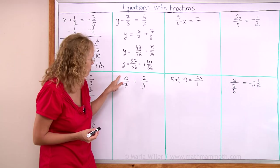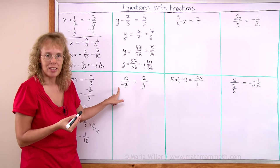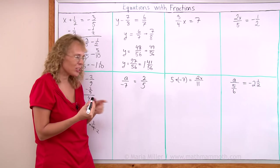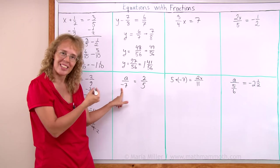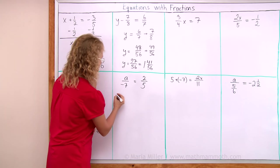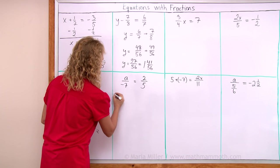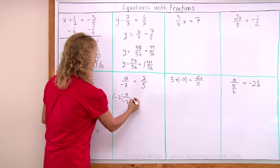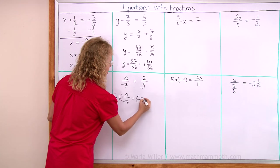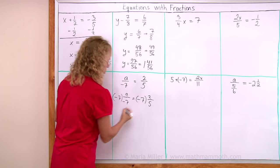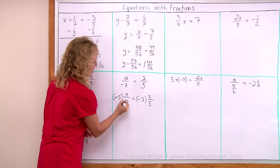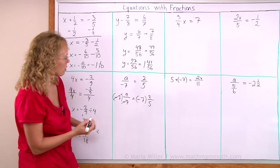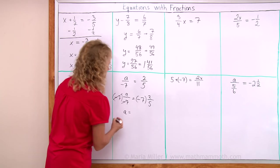Over here the variable is divided by something. So then we solve the equation by multiplying both sides by negative 7. We get negative 7 times a over negative 7 and then on this side negative 7 times 2 fifths. Here the negative 7s cancel so a is now left alone on this side which is good.